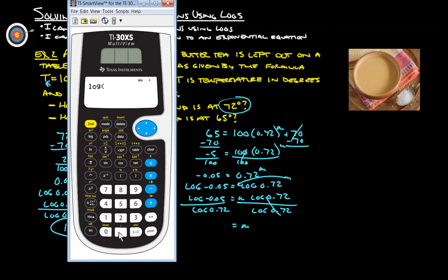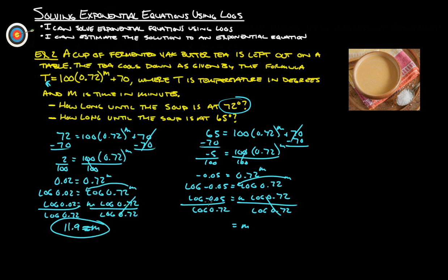And we get that m equals, and then here's the interesting or maybe not so interesting part, log negative 0.05 gives us an error. Because you cannot take 10 to some power to get a negative number. So, you cannot take the log of a negative. So, this cannot happen. And here's another reason why. Because if this thing, you're trying to get it down to 65, this number here will always be positive, and you're adding a positive number to 70. So, this will never get below 70 degrees, which is probably what the room temperature is. So, how long until the soup is at 65? Never. Not until you put it in the fridge.